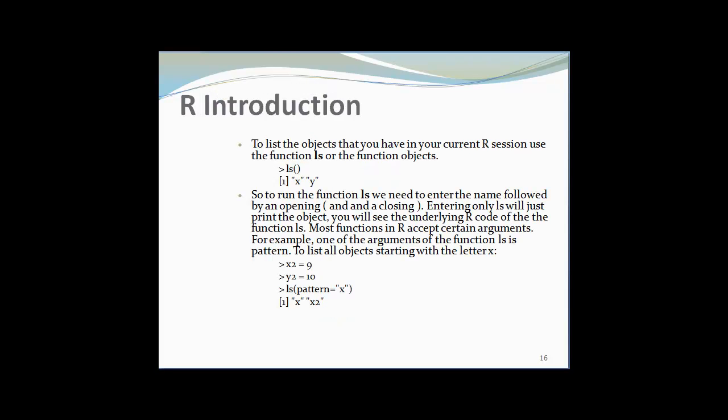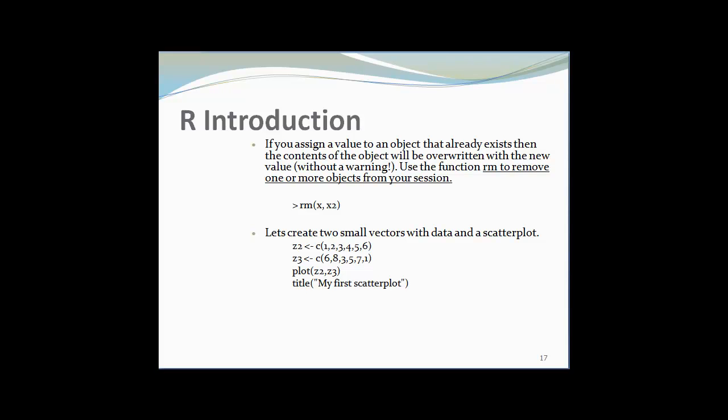To get the list of all the objects that you have used in your current session R, type the function ls and open bracket. To list all the objects starting with the letter X, type ls in the bracket pattern equal to X. If you want to remove some of the objects from your current session, type rm and in the bracket the names of the objects. If I want to remove X and X2 objects from my current list, I will type rm, X and X2.